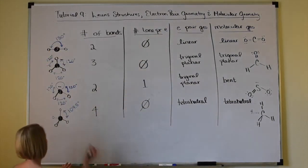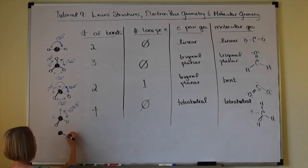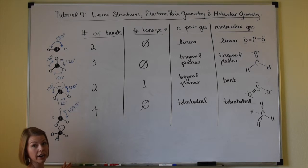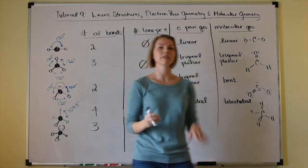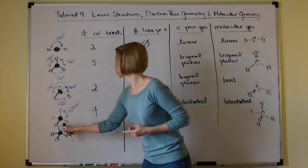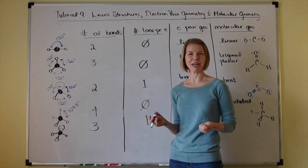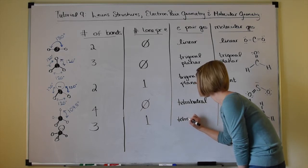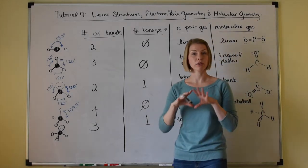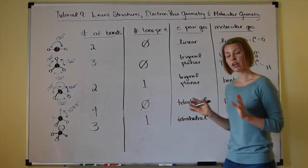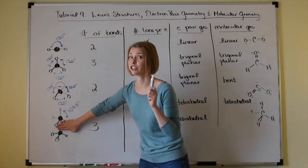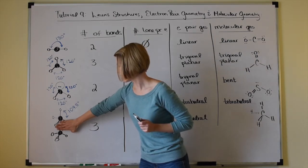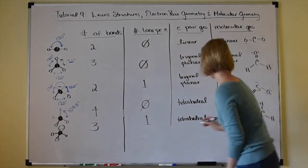In our next example, let's say we have three bonding pairs and one lone pair of electrons. Number of bonds is three, number of lone pairs is one. Still 109.5 degrees apart in three-dimensional space because there are still four charge clouds. The lone pair wants its fair share of space. So the electron pair geometry is still tetrahedral — accounting for all four charge clouds including bonding and lone pairs. But when we go to the molecular geometry, we ignore the lone pair and look at the atoms themselves — we're left with a little pyramid shape, which we call pyramidal.